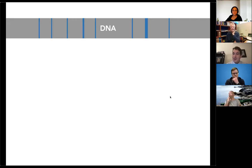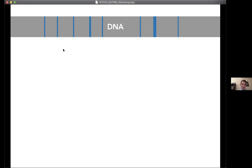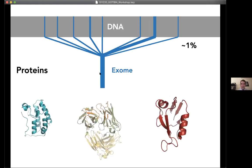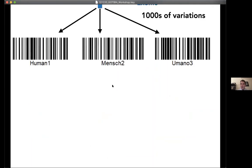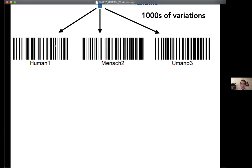A genome is comprised of a large part of coding DNA, which is actually a very small fraction that codes for proteins. This small fraction of our DNA harbors a large part of the genetic variations that we have as individuals. You can see the genetic variations in each of us as sort of a fingerprint of our identity.